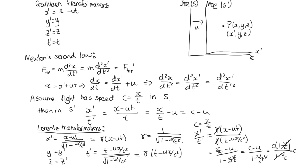So if something is travelling with speed c in Joe's reference frame, it is also travelling with speed c in Mo's reference frame when we use the Lorentz transforms. That's why these transformations are so important.